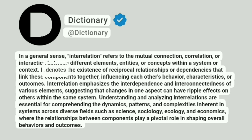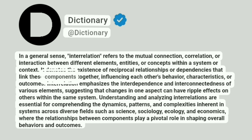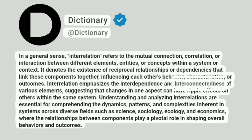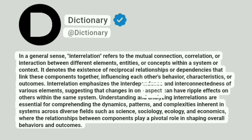It denotes the existence of reciprocal relationships or dependencies that link these components together, influencing each other's behavior, characteristics, or outcomes. Interrelation emphasizes the interdependence and interconnectedness of various elements, suggesting that changes in one aspect can have ripple effects on others within the same system.